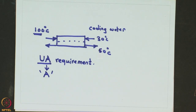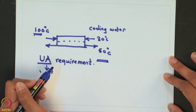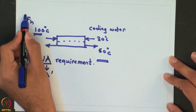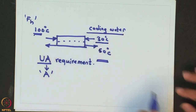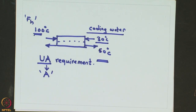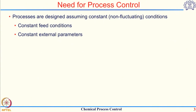Now, if you put that exchanger in a real plant, would it always give 50°C as the outlet of the hot stream? It will, provided your hot stream enters at 100°C, its flow rate remains constant at the design value, and the cooling water is available at 30°C. However, all these assumptions are not always maintainable when the plant is actually operated. When you design a plant you always design it at constant properties such as feed conditions, feed temperature, flow rate, feed composition, and external parameters like cooling water temperature. When you operate the plant, the operation is quite dynamic and is subjected to various disturbances.